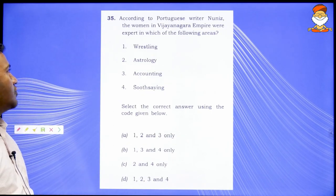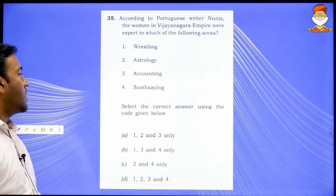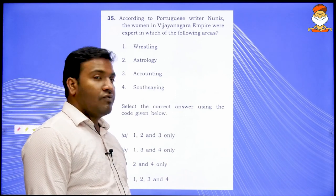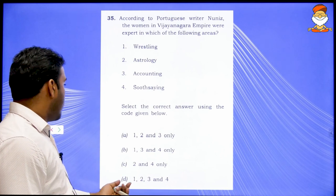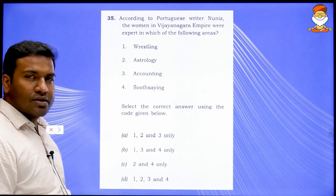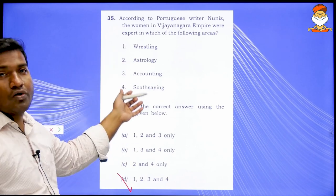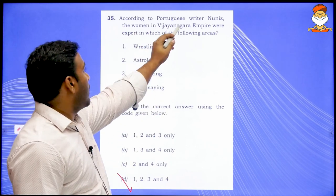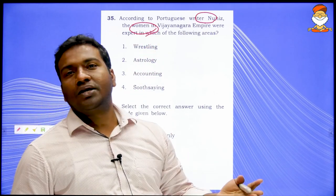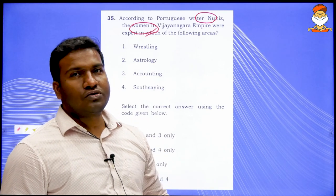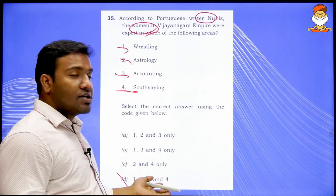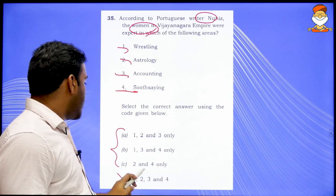According to Portuguese writer Nunes, women in the Vijayanagara Empire were expert in each of the following areas — all four options including 1, 2, 3, and 4 are given with 'all of the above' as an option. Since we do not have his book and cannot exclude anything, go ahead and hit 'all of the above.' If some other historian's claim differs, any other option selected could go wrong.